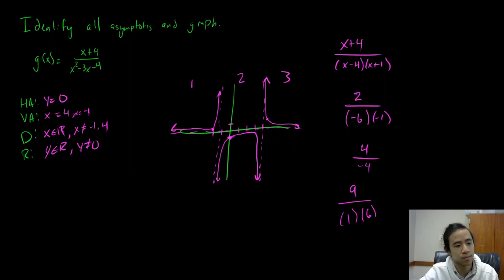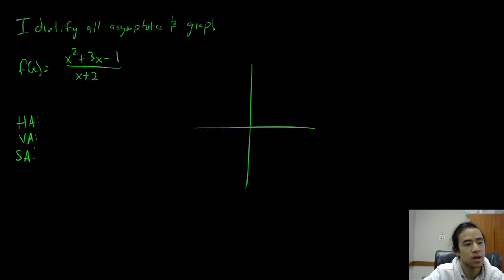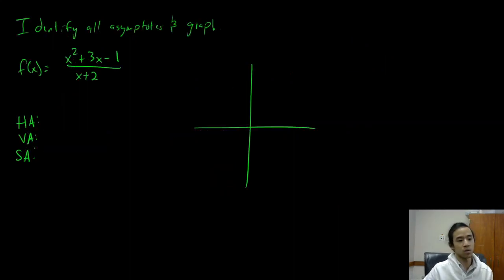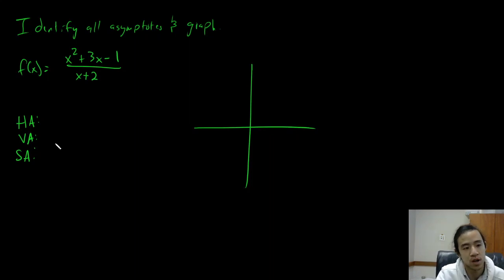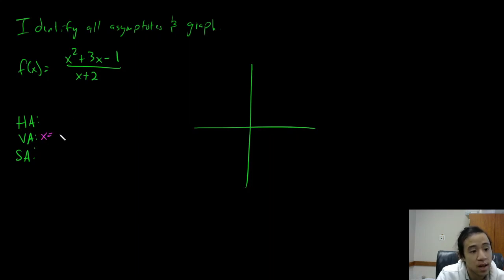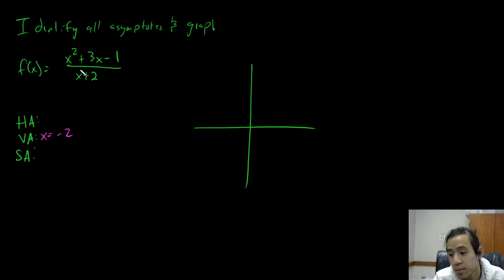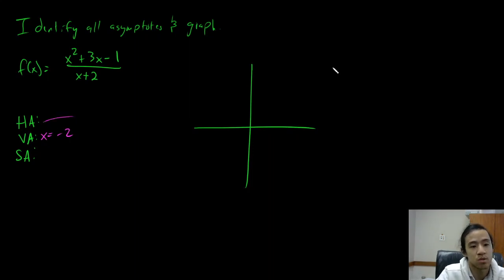Let's go ahead and try another one. So here is one and we're going to do this one as well. We start with the vertical asymptote — setting the bottom equal to 0, we can see we're going to have a vertical asymptote at x equals negative 2. We're not going to have a horizontal asymptote because it's bigger on top, but since it's bigger on top by only 1, we will have a slant asymptote.